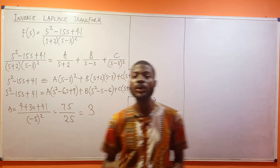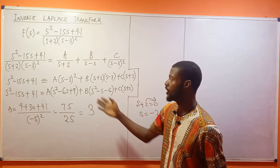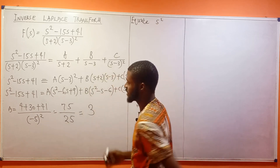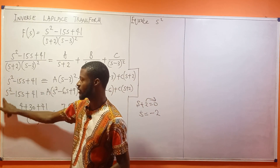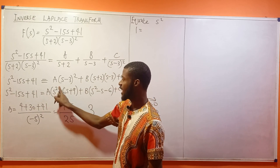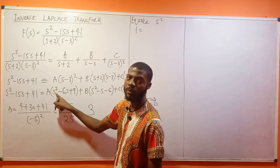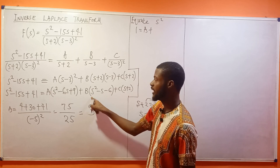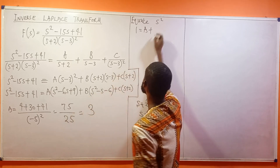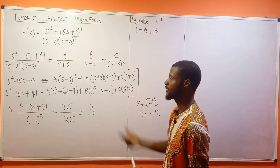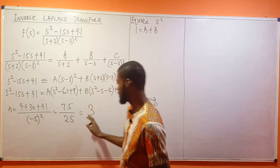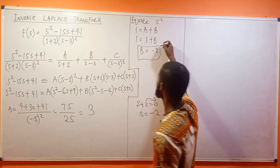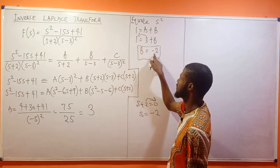Now I can equate the s² coefficients. The s² coefficient on the left side is 1. On the right side it is A plus B. Since A is 3, we have 1 equals 3 plus B, so B equals 1 minus 3, which gives B equals -2.